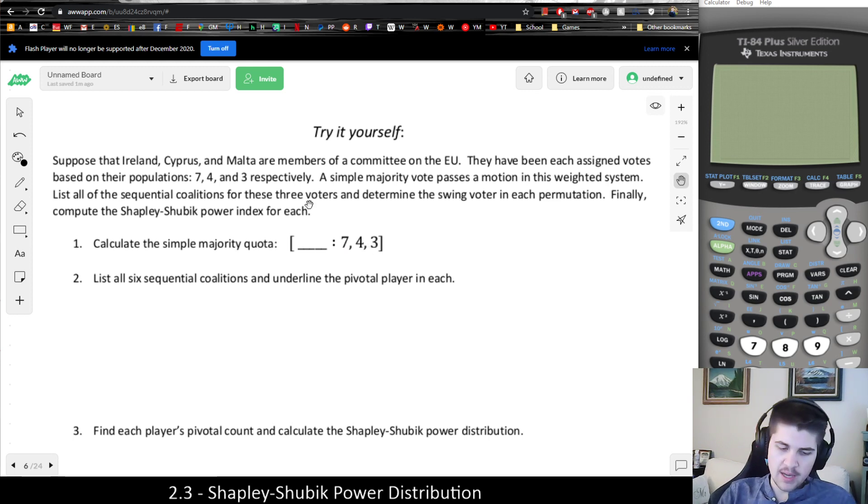We're given three players: 7, 4, and 3. And it tells us what our quota should be - basically a simple majority of the total number of votes. So what I could do is start by finding what's the total number of votes. V, that should be 14, right? Because that would be, yeah, 7 plus 3 is 10, 14. And then a majority, a simple majority, would just be half. So simple majority would be V divided by 2, which is 7.